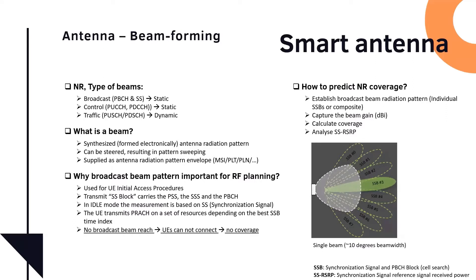So even in the idle mode, when it's not in the connection mode, idle mode, the measurement is based on the SSS. The SSS is on the broadcast beam. And also, as we'll find out later on, SSB is also transmitting the SSRSRP, which will be used to do coverage assessment or coverage estimate. So also the UE transmits the PRACH. PRACH is the first step in talking to the base station.